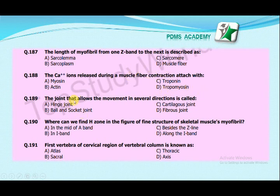The joint that allows movement in several directions is called: hinge joint, ball and socket joint, cartilaginous joint, or fibrous joint? The correct answer is ball and socket joint. Where can we find the H zone in the fine structure of a skeletal muscle myofibril? In the middle of the A band, in the I band, or beside the Z line? The correct answer is in the middle of the A band.